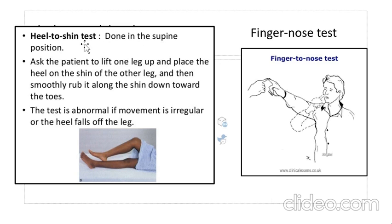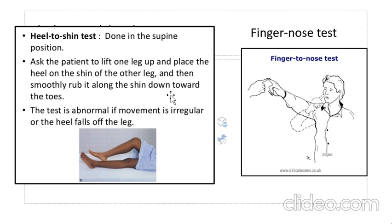For the heel-to-shin test, done in supine position, ask the subject to lift one leg and place the heel on the shin of the other leg, then smoothly rub it along the shin downward toward the toe. The test is abnormal if the movement is irregular.